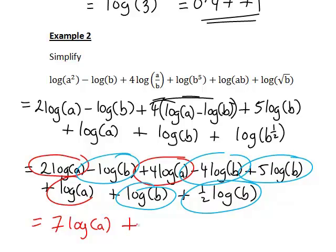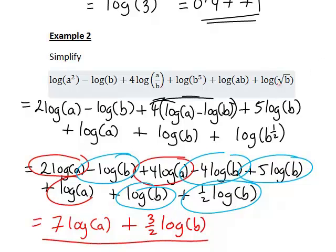That is simplifying our expression leaves us with 7 log a plus 3 on 2 times log b, which you can see, thanks to the help of our log laws, looks a lot simpler than what we started with.